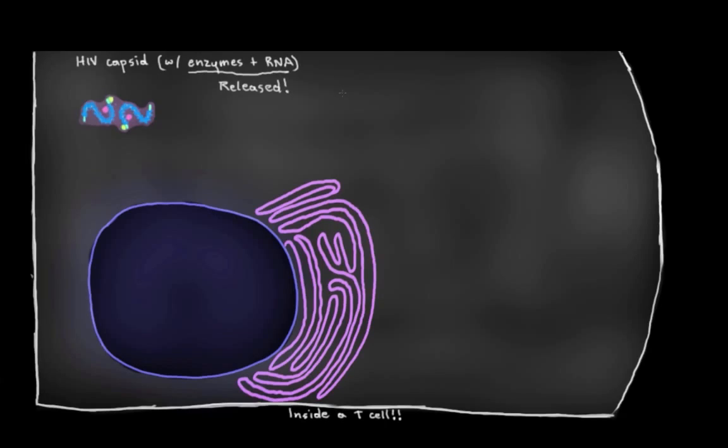And, you know, most viruses at this point are happy to just use our cellular machinery, like our ribosomes and our cytoplasmic nucleotides to make copies of themselves, and they leave our DNA alone. But not HIV. HIV is a little sneakier than normal viruses.